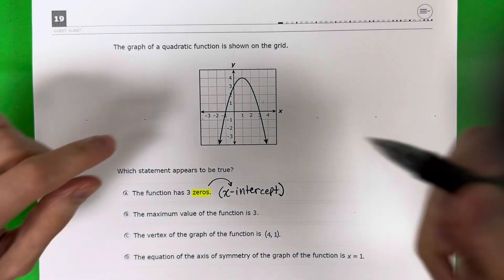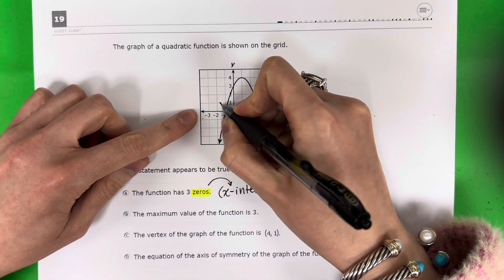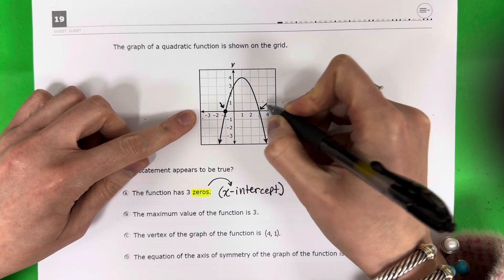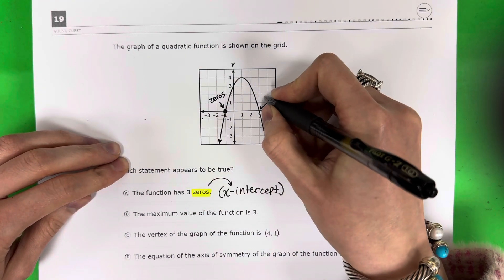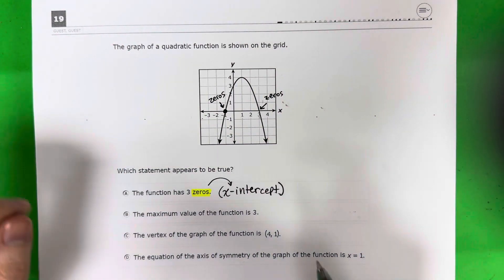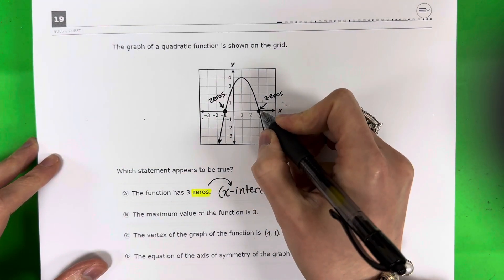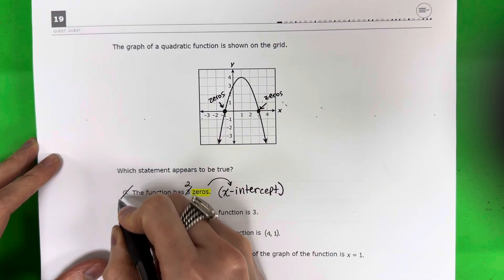So let's take a look here. What are the x-intercepts here? Negative one and three. Those are the zeros because they are touching the x. Okay, so what do you guys think? How many are there? There's one, two. There are two, not three. So it's not A.